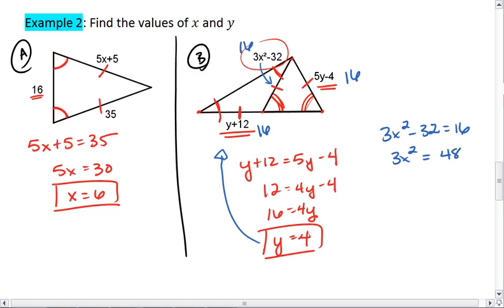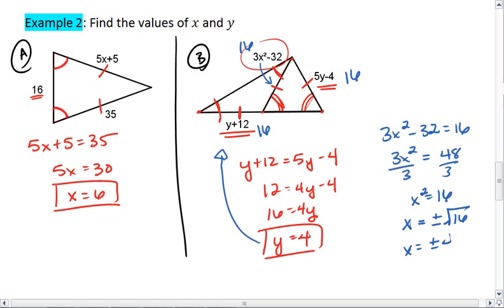We now have 3x squared equals 48. If we divide both sides by 3, we get x squared equals 16. We then get x equals plus or minus the square root of 16, which means x equals positive or minus 4.